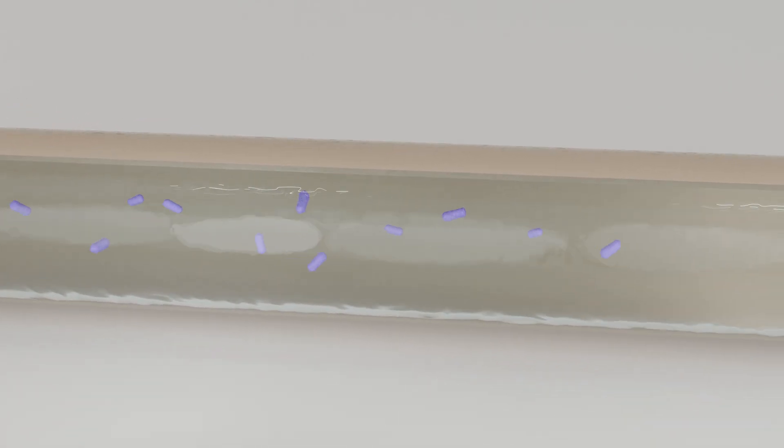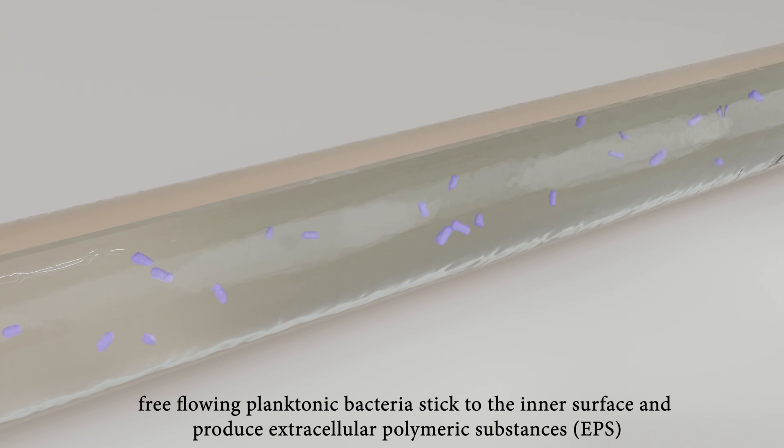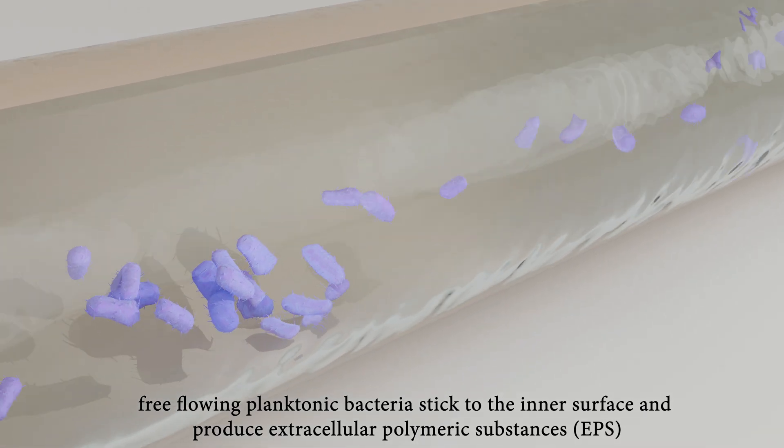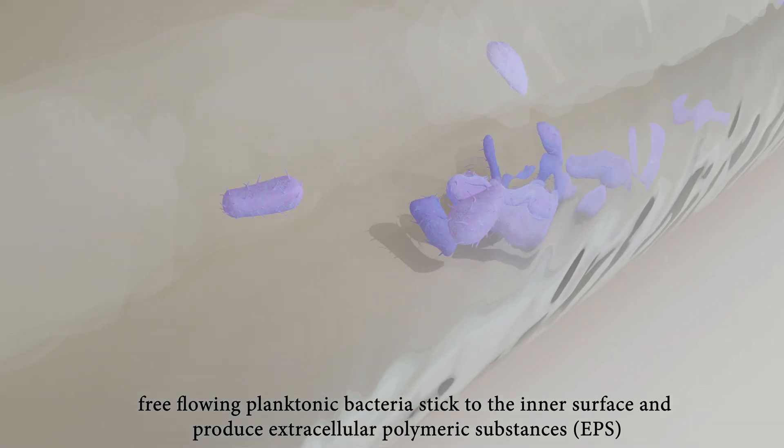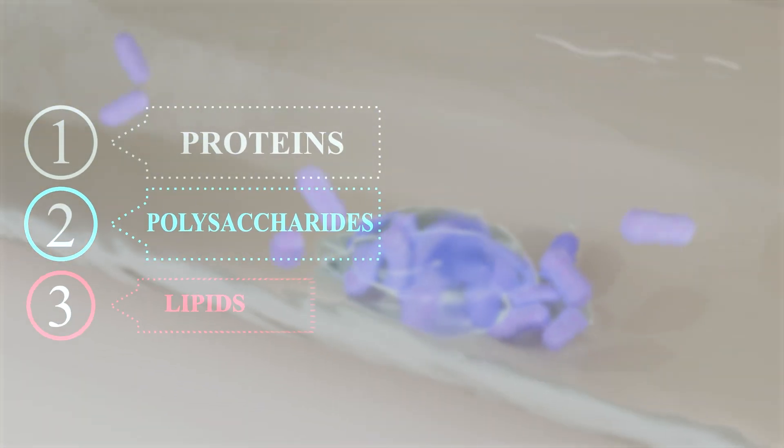Some of the free-flowing planktonic bacteria settle on the inner surface and subsequently produce extracellular polymeric substances (EPS), which is made up of proteins, polysaccharides, lipids, etc., which act like glue for cells.